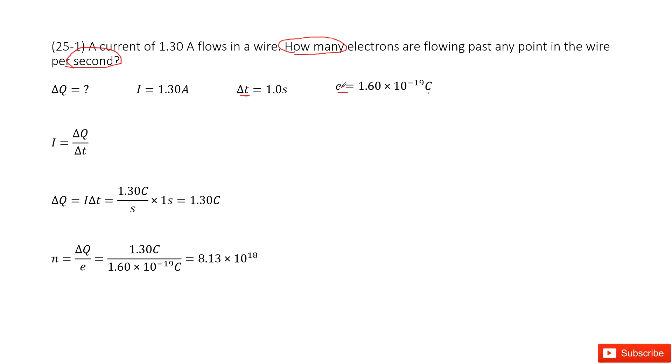So if we can find the charge that flows through the wire per second, the problem is solved. Now let's look at how we can get this charge.